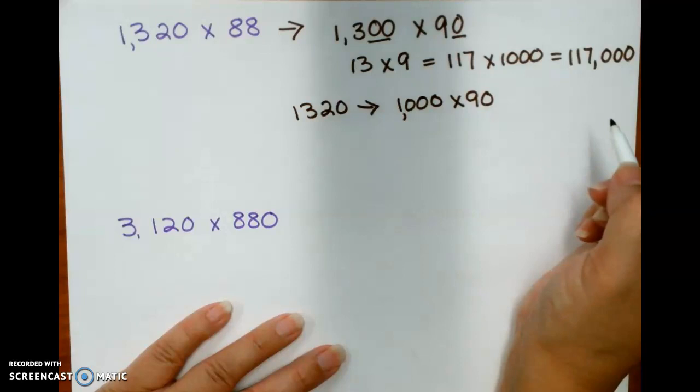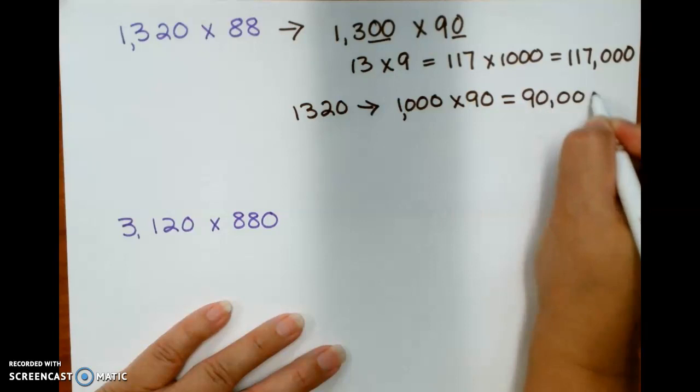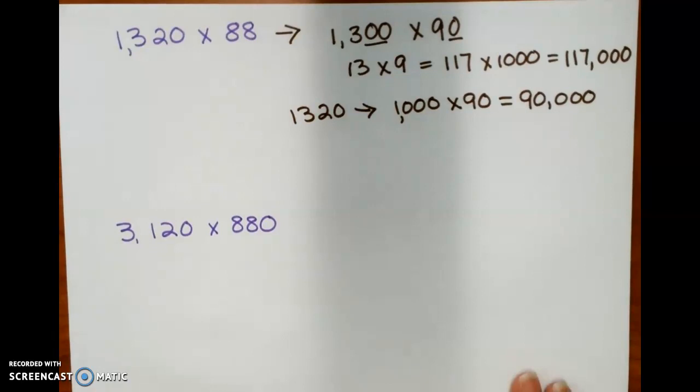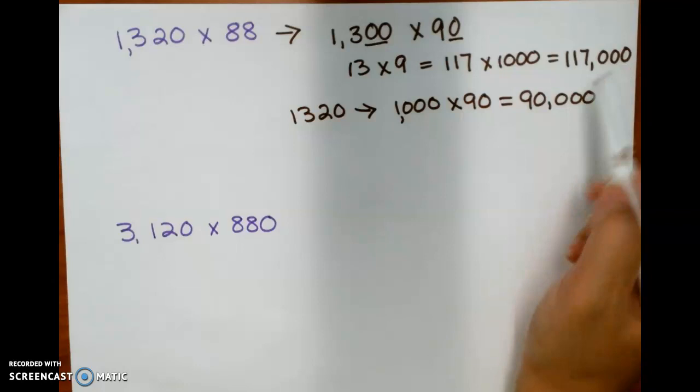Which one do you think is closer to the actual product? 117,000 is closer, but either answer is still correct.